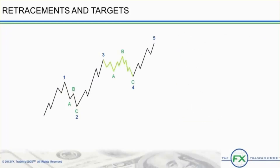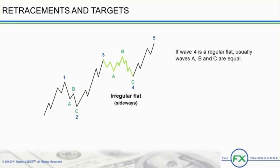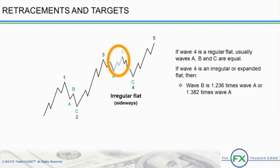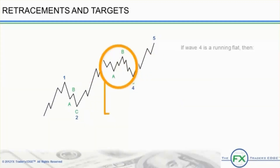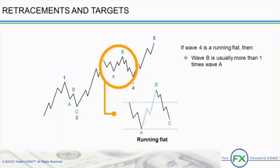This wave 4 example is that of an irregular flat. If, however, wave 4 is a regular flat where wave B does not go above the start of wave A, usually waves A, B, and C are equal. Wave B always retraces to at least 90% of A. If wave 4 is an irregular or expanded flat, then wave B is usually 1.236 times wave A or 1.382 times wave A. Wave C is usually 1.618 times wave A or 2.618 times wave A. If wave 4 is a running flat, then wave B is usually more than 1 times wave A, and wave C does not extend beyond the end of wave A. The characteristic of a running flat is that the trend is very strong and wave C falls short of the typical move one can expect.